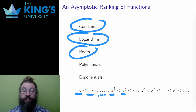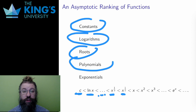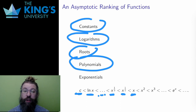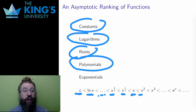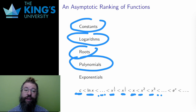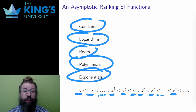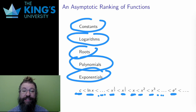All of these roots grow faster than any logarithm. After the roots are the polynomials. The linear function is the slowest of these, f of x equals x, and then the asymptotic order increases with the degree of the polynomial — the quadratic is of a higher order than the linear function, the cubic of a higher order than the quadratic, and onward. The exponential grows faster than any polynomial, even a very high degree polynomial. Of the commonly used functions, the exponential has the fastest growth, the highest asymptotic order.